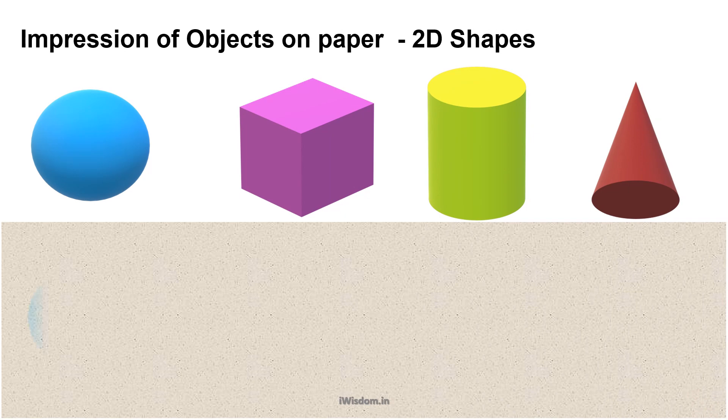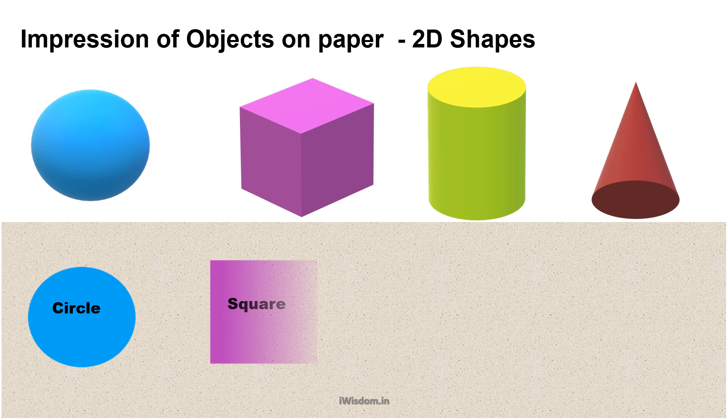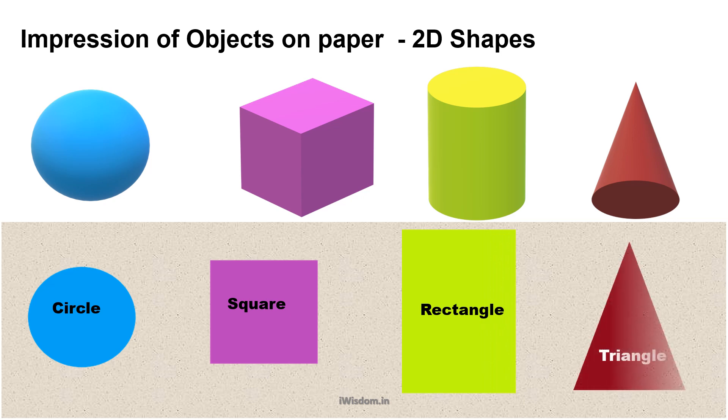But when you place cylinder sideways to roll on a paper, the impression it makes is not circle. When you look from the top, you see rectangle. Similarly in rolling position, cone gives the shape of triangle from top.